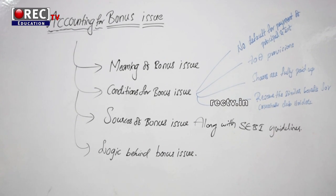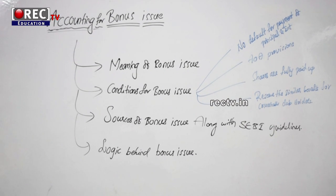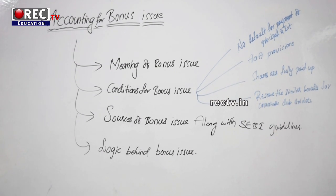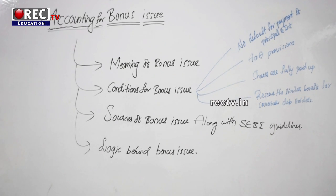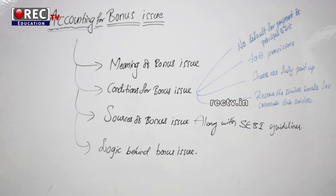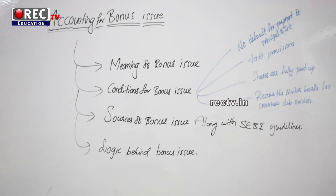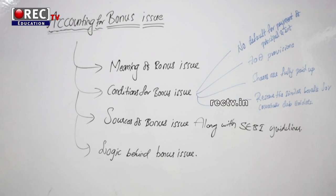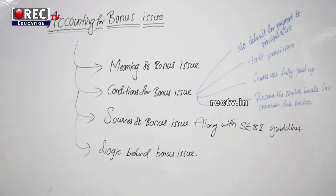So friends, if your shares are partly paid up, you should call whatever amount is due before the bonus issue. First you have to call for whatever amount is unpaid on the shares, and after the shareholders pay the full amount, you can proceed with the bonus issue.